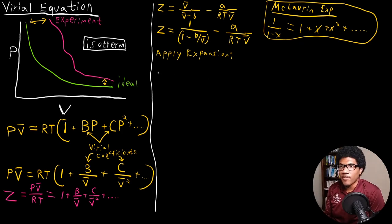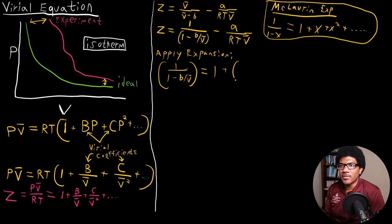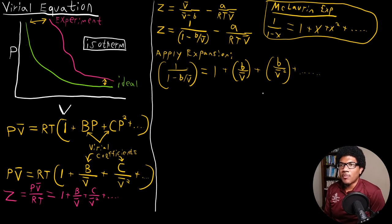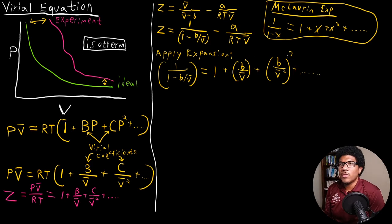I'm only going to do this expansion for the first term. So doing the expansion on 1 over (1 minus B/V̄), we can re-express that as 1 plus B/V̄ plus (B/V̄)² plus dot dot dot. So we have these terms expanded — we've done the McLaurin expansion.